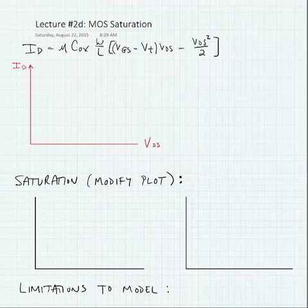So in the last lecture, we noted that in the triode region, the drain current of the MOSFET is equal to mu times C-ox times the width of the transistor divided by the length times VGS minus VTE times VDS minus VDS squared over 2.